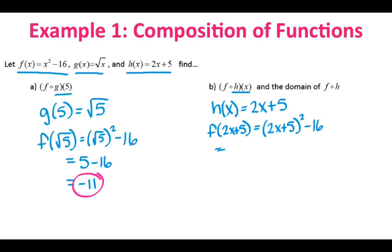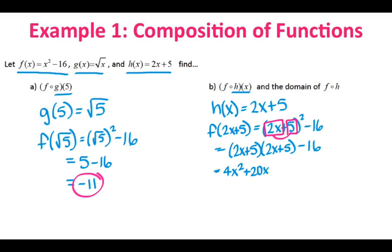F was x squared minus 16, so instead of x, I have 2x plus 5 quantity squared minus 16. You can do it one of two ways: multiply 2x plus 5 times 2x plus 5 and subtract 16, or use the square double square shortcut. Squaring the first term gives 4x squared; multiplying the two terms and doubling gives 20x; squaring the second term gives 25; and of course, minus 16. Combining like terms: 4x squared plus 20x, and 25 minus 16 is 9.